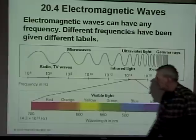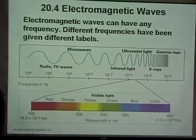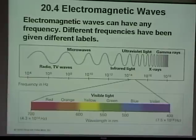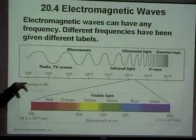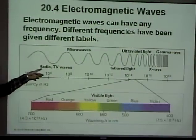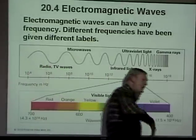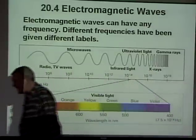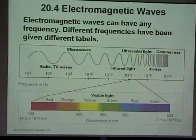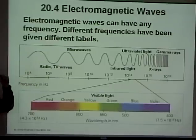This chart shows frequency in hertz but not wavelength. For radio and TV waves, the wavelength is really long — several meters — a big, long wave. You can't put a lot of information on it because the frequency isn't that high, but it's enough to carry a picture or sound.